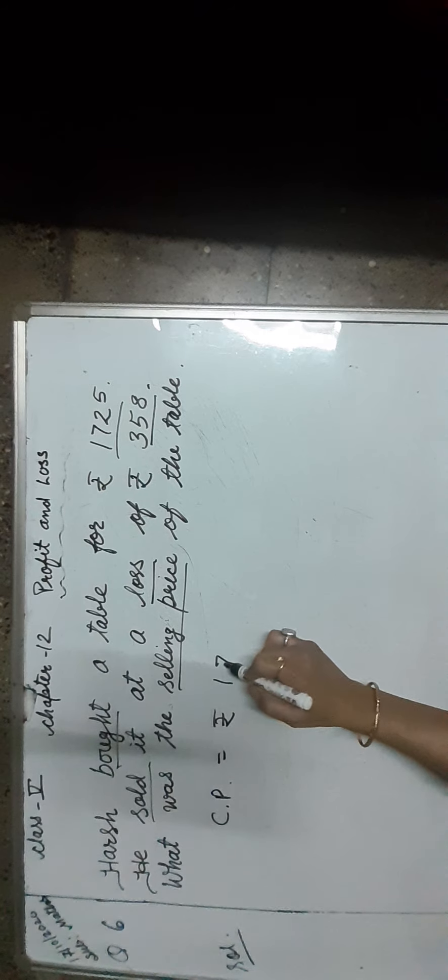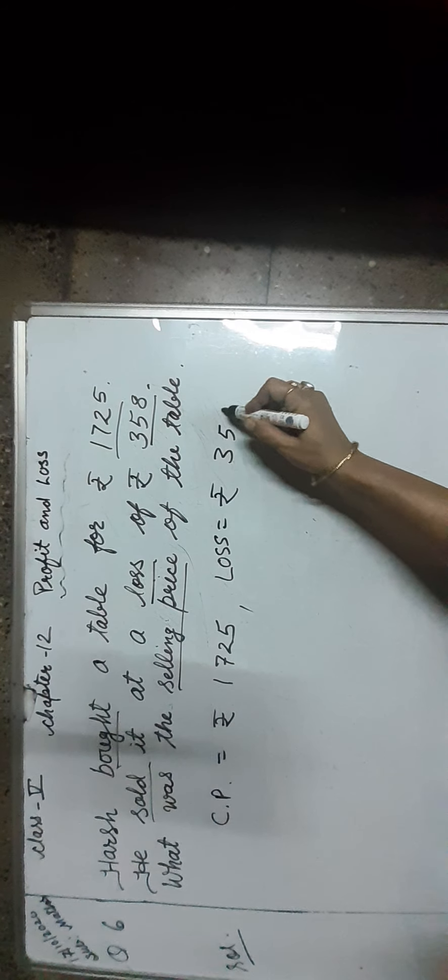Let us find out the cost price and the selling price. The price at which Harsh bought a table is the cost price. So cost price is equal to Rs. 1,725. Here, he sold it at a loss of Rs. 358. It means loss is given. So loss is equal to Rs. 358.